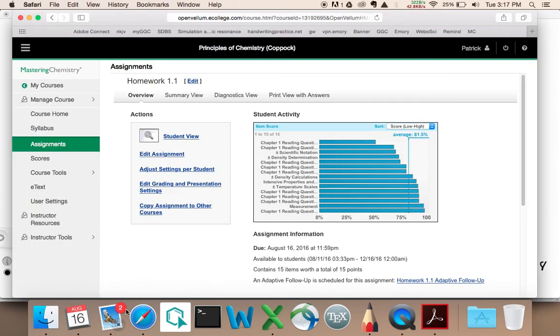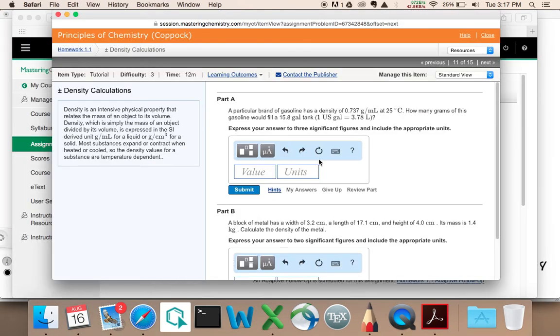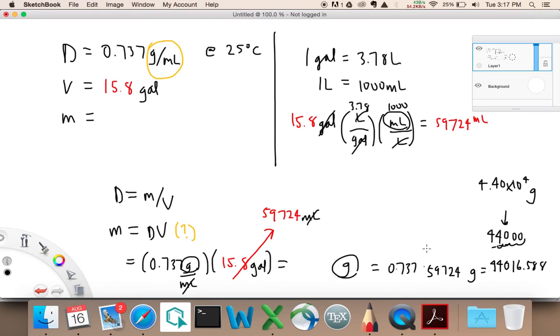Grams, right? Just a moment here. Let me look back at this again. How many grams? That's right. Okay, and so there's your answer. It's 4.40 times 10 to the 4th grams.